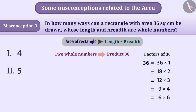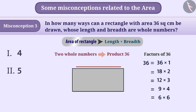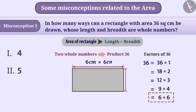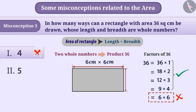Some students believe that the length and breadth of a rectangle can never be equal. With this understanding, they conclude that 6 cm × 6 cm cannot be the measurement of a rectangle, so only 4 pairs are valid. With this understanding, they choose option 1, which is a wrong answer.